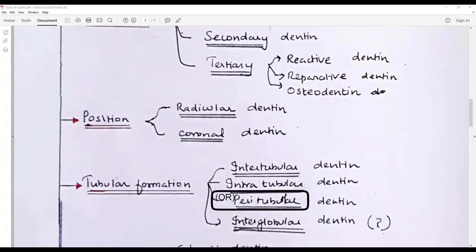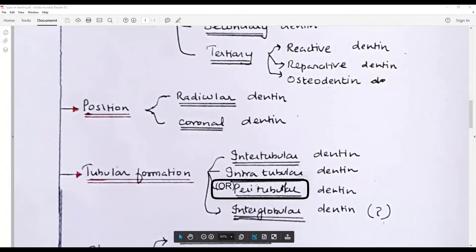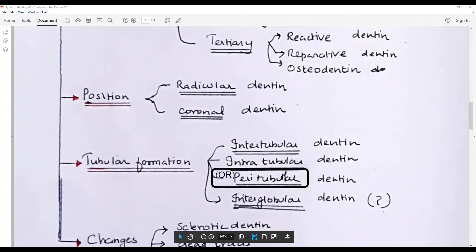By tubular classification, it could be intertubular between two tubules, intratubular or peritubular surrounding the tubules, is intratubular or peritubular dentin.